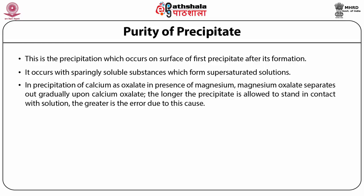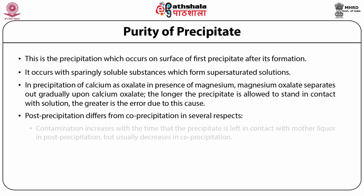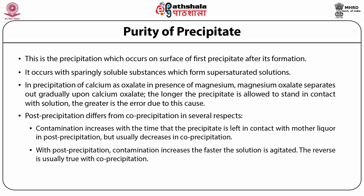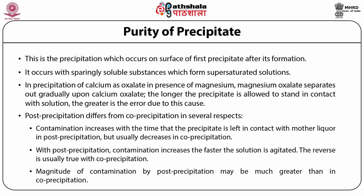Post-precipitation differs from co-precipitation in several aspects. In post-precipitation, contamination increases with time the precipitate is left in contact with the mother liquor, but usually decreases in co-precipitation. With post-precipitation, contamination increases faster when the solution is agitated, whereas the reverse is usually true with co-precipitation. The magnitude of contamination by post-precipitation may be much greater than in co-precipitation.